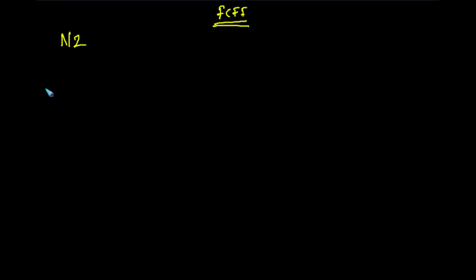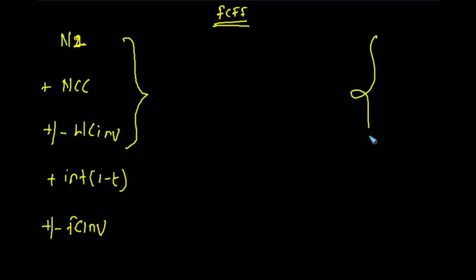So you start with net income, first one, plus non-cash charges plus minus working capital investment, plus interest net of taxes, plus minus fixed capital investment. This is your first metric. Now these three numbers are same as the CFO. So that's your second formula: CFO plus interest one minus t plus minus fixed capital investment.